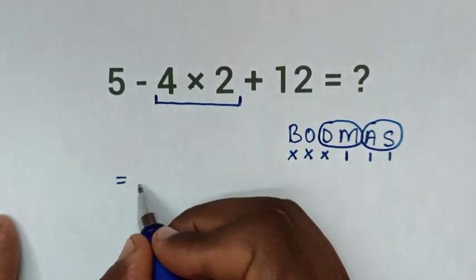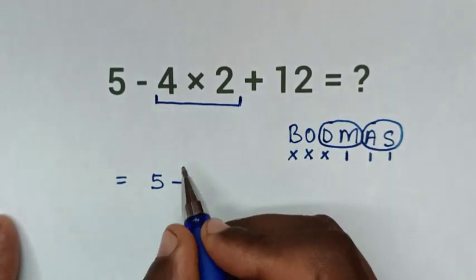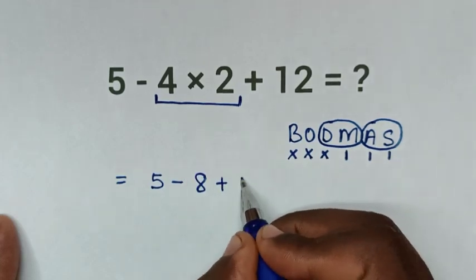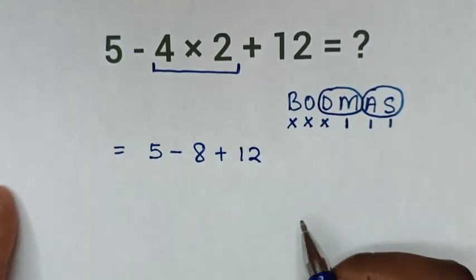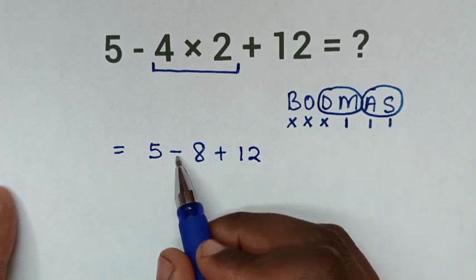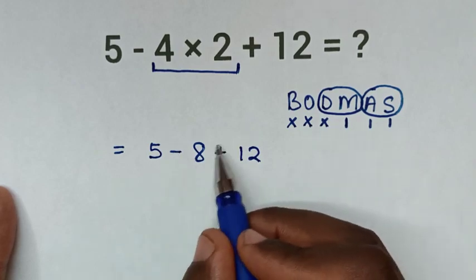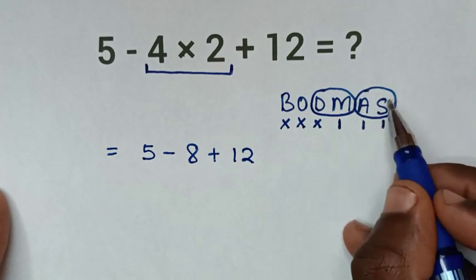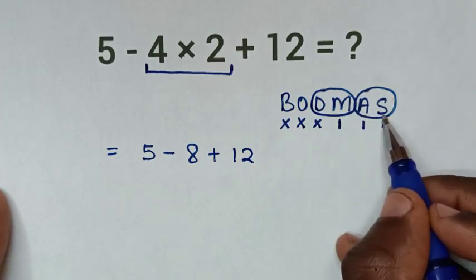So it will be equal to 5 minus 8 plus 12. Now here we have two operations: subtraction and addition, as in the last group we have addition and subtraction.